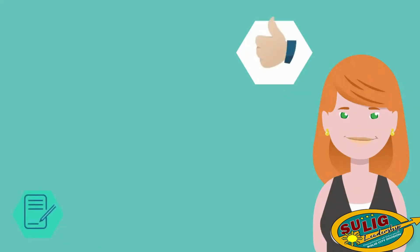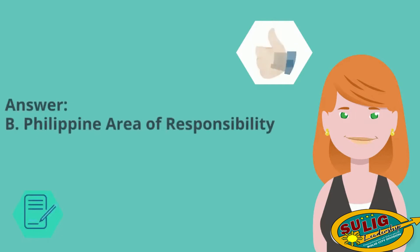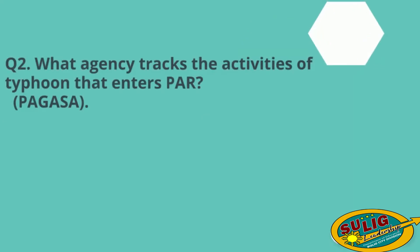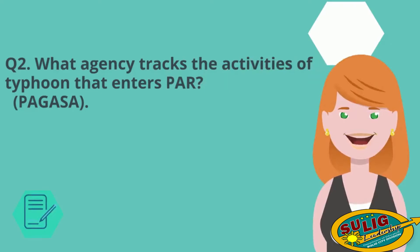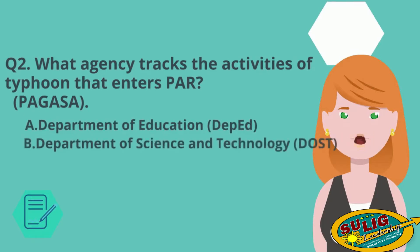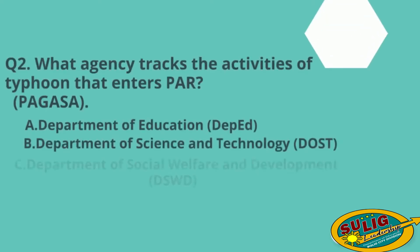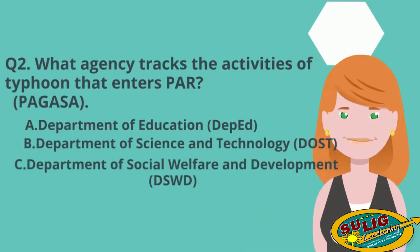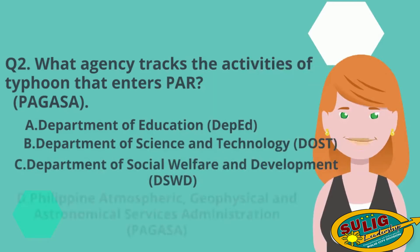The answer is letter B — Philippine Area of Responsibility. Now for question number two: What agency tracks the activities of a typhoon that enters PAR? A. Department of Education or DepEd. B. Department of Science and Technology or DOST. C. Department of Social Welfare and Development or DSWD. D. Philippine Atmospheric Geophysical and Astronomical Services Administration.